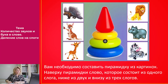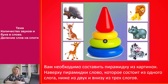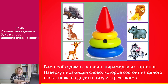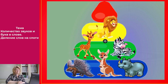А теперь давайте немного поиграем. Вам необходимо составить пирамидку из картинок. Наверху пирамидки разместите слово, которое состоит из одного слога, ниже — из двух слогов, а в самом низу — слова из трёх слогов. Будьте внимательны. Молодцы! Давайте проверим себя. Слово из одного слога — лев. Слова из двух слогов — жираф, зебра. Слова из трёх слогов — дикобраз, кенгуру, носорог. Вы справились с заданием. Молодцы!